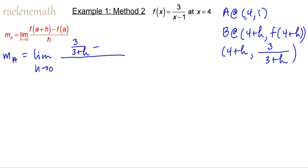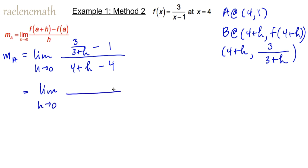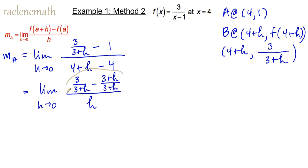So y2 is 3 over 3 plus H, minus y1 which is f of A equals 1, all over 4 plus H minus x1, which is 4. We can simplify this: the denominator is simply H. The numerator, again, we're going to need to get a common denominator with the fractions. So we can make this 3 over 3 plus H minus 3 plus H over 3 plus H. We should probably do a direct substitution — substituting H equal to 0, we end up getting 3 over 3 minus 3 over 3, which is 0 all over 0.